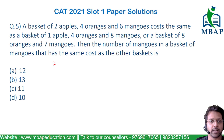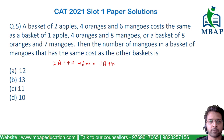On one side they are saying 2 apples plus 4 oranges plus 6 mangoes equals the cost of 1 apple plus 4 oranges plus 8 mangoes, equals the cost of 8 oranges plus 7 mangoes.